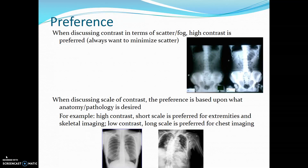For example, high contrast short scale is preferred for extremities and skeletal imaging. Low contrast long scale is preferred for chest imaging.